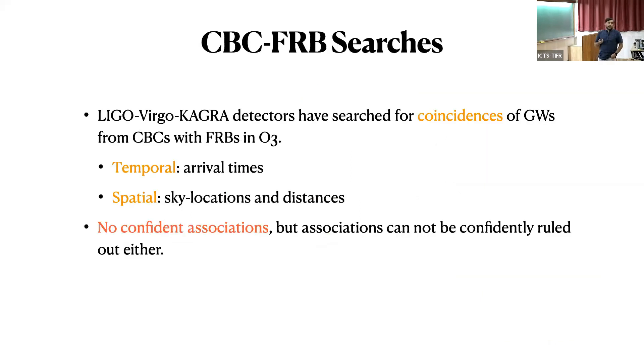We can ask the question whether anybody has done this to find this association. LIGO-Virgo-KAGRA collaboration did this search in its third observing run, and it actually looked for temporal and spatial coincidences of gravitational waves observed at that time as well as the FRBs. They looked for the arrival times of these pulses as well as the sky locations and distance. They did not find any confident association, but the association could not be ruled out either.